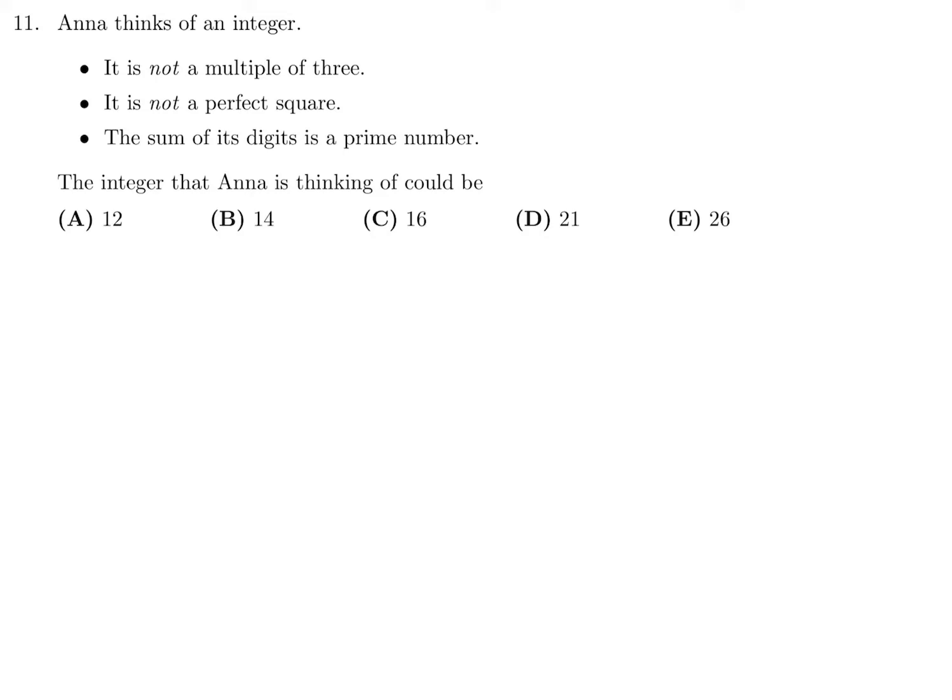Let's go through the answer choices. It's not a multiple of 3, so it can't be 12 or 21. It is not a perfect square, so it can't be 16 because that is 4 squared. Now we're left with 14 and 26. The sum of the digits of 14 is 1 and 4, which is 5. The sum of the digits of 26 is 2 plus 6, which is 8. Which one of these is prime? Obviously this one. So that number is 14. Number 11, the answer is B.